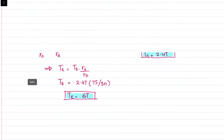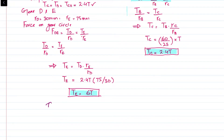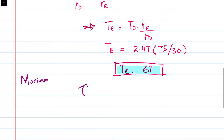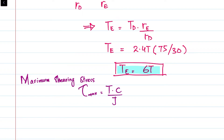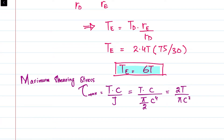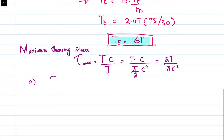Now we find the maximum shearing stress. The formula is τ_max = T·C / J. For a solid shaft, the polar moment J = (π/2)·C⁴, so this simplifies to τ_max = 2T / (π·C³). This is the general formula for maximum shearing stress in a solid circular shaft.